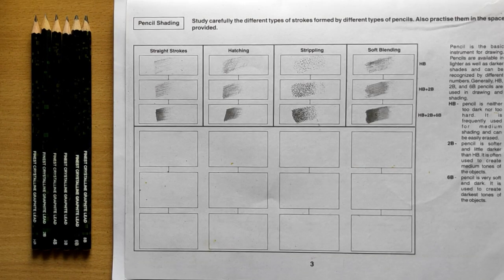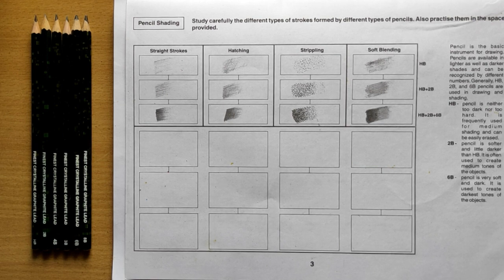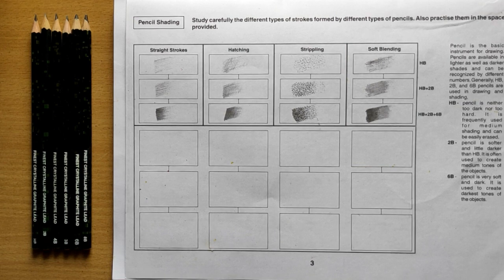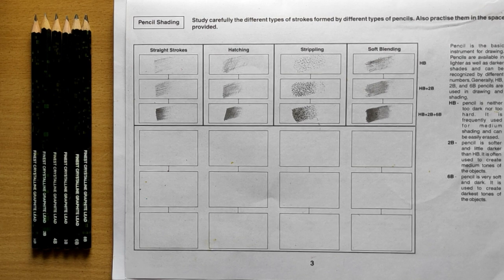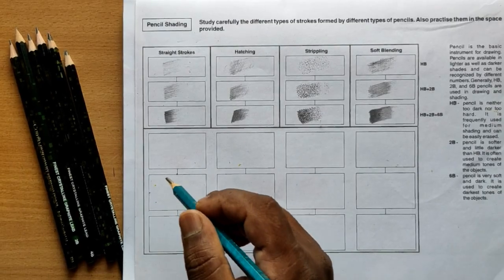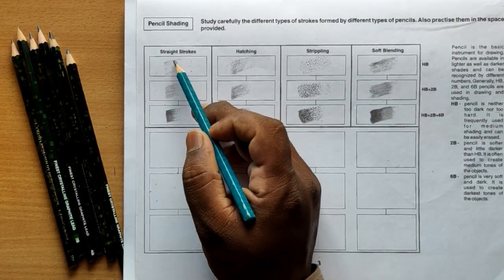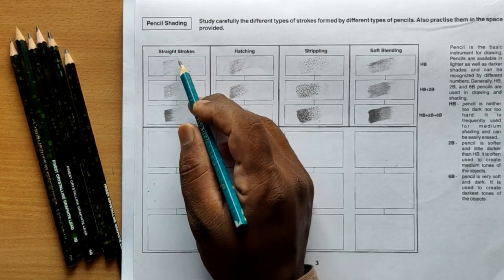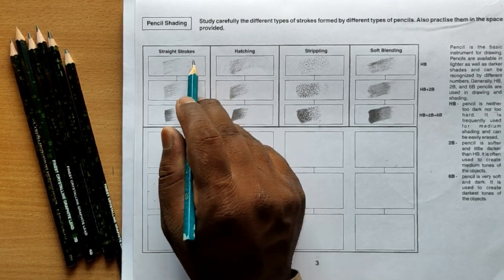Step by step, class 7 pencil shading topic. Study carefully the different types of strokes formed by different types of pencils and practice them in the space provided. Four kinds of pencil shading methods have been given. Before going to learn the different methods, it's very important to know about different grades of pencils. Please follow the link in the description for the topic 'grades of pencils.' Let us see the different pencil shading methods. The first one is the straight stroke method, which we are going to deal with further in this class.